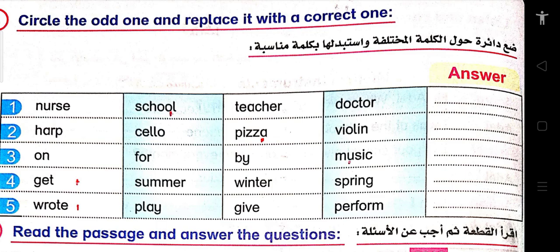Another kind of question: circle the odd one out and replace it with the correct word. Number one: nurse, school, teacher, doctor — remove school and put vet. Number two: harp, cello, pizza, violin — remove pizza and put xylophone. Number three: on, for, by, music — remove music and put in. Number four: get, summer, winter, spring — remove get and put fall. Number five: root, play, give, perform — remove root and put write.